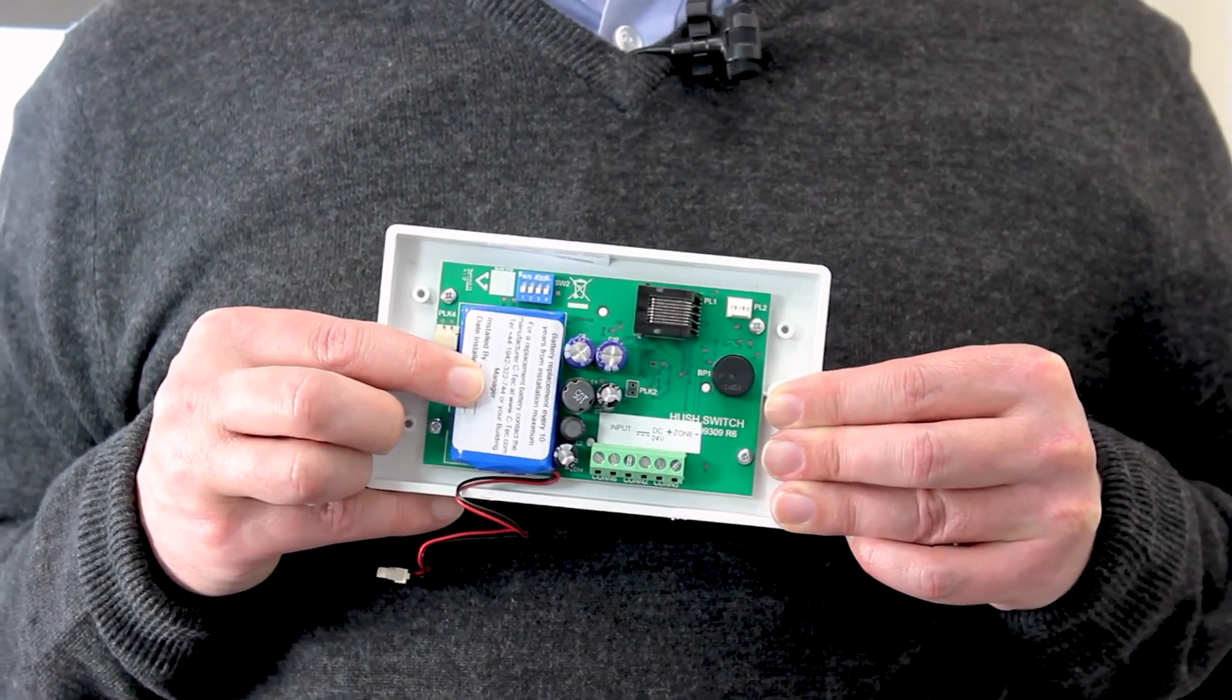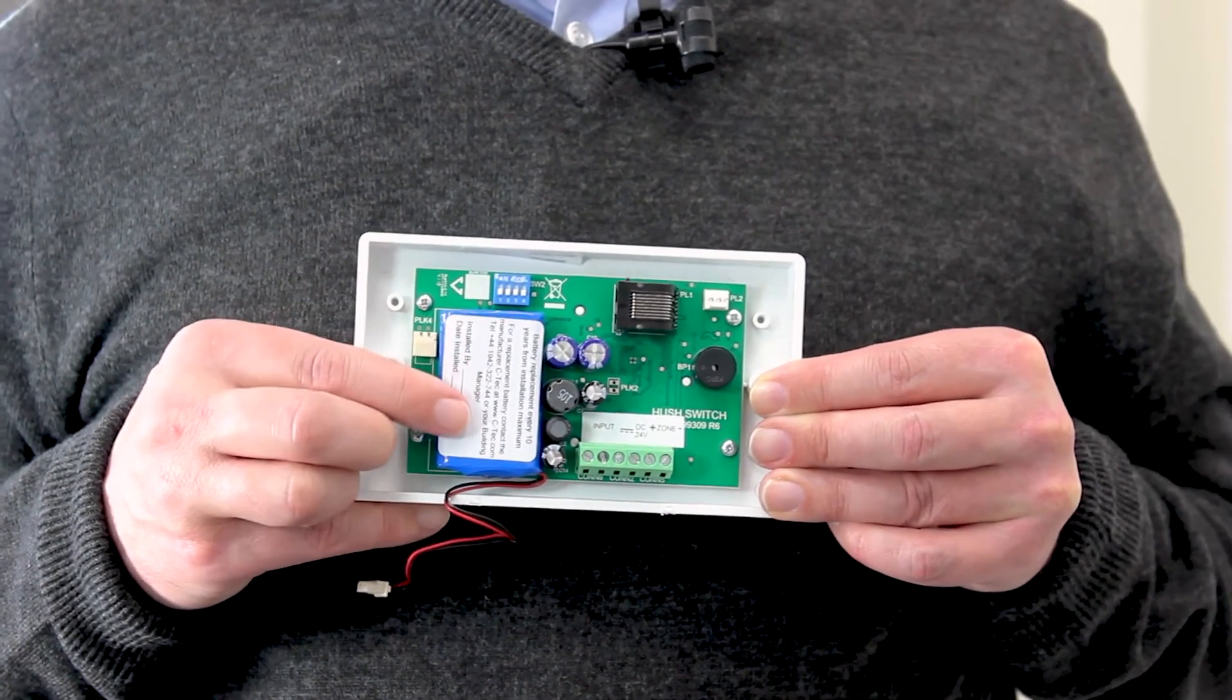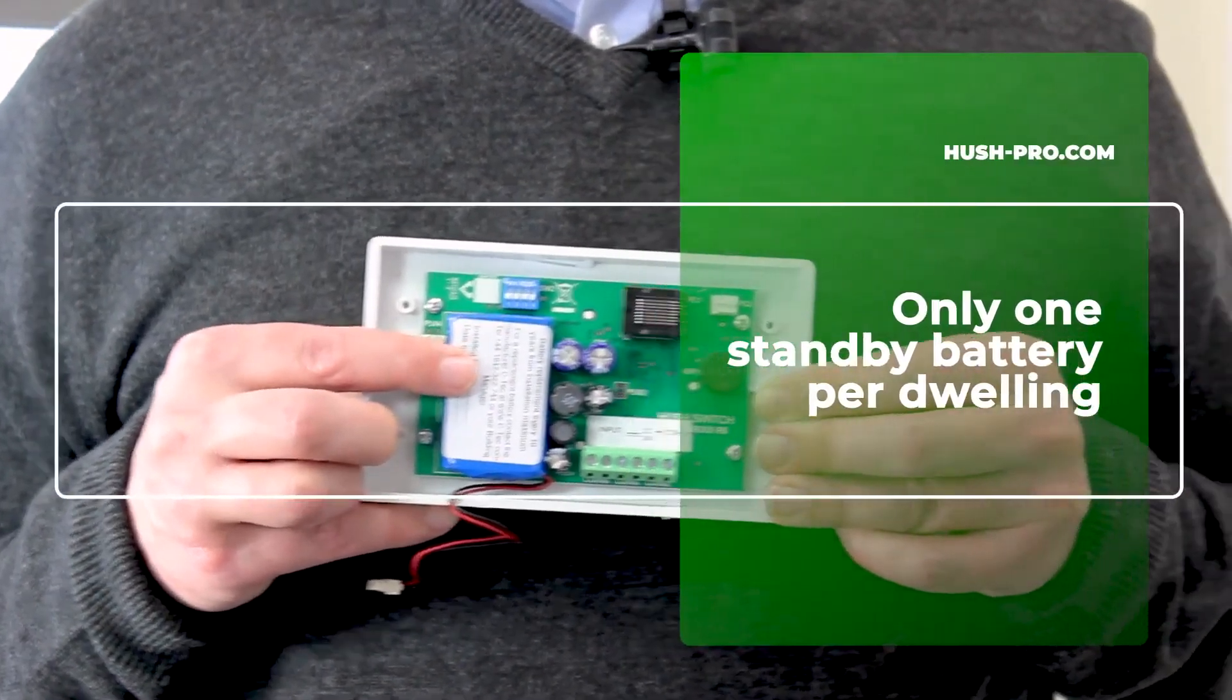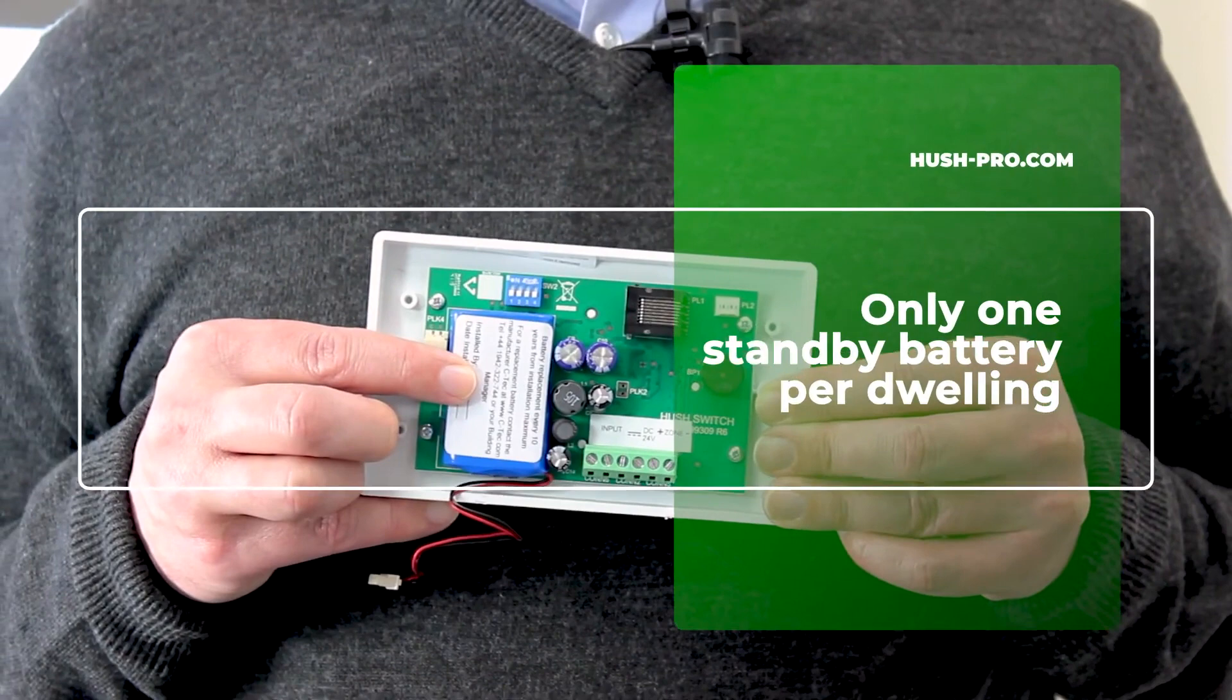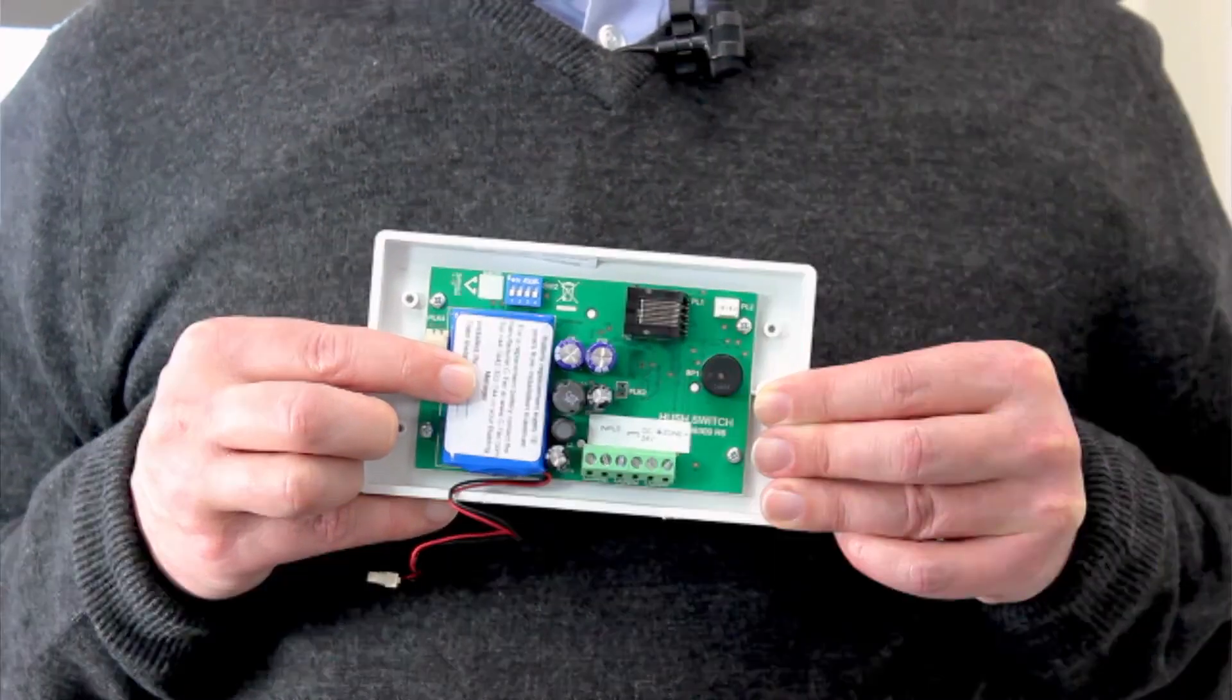This battery is capable of powering all of the dwelling's devices should the mains fail, meaning the system is very environmentally friendly compared to other systems which typically have a battery in every device.